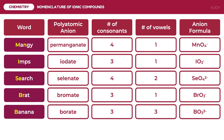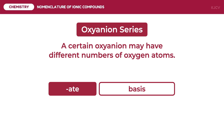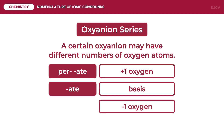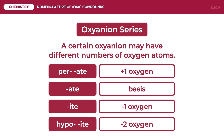However, some oxyanions end in the suffix "-ite". Anions with this suffix are derived from the oxyanion with the suffix "-ate". If we have an extra oxygen atom from the "-ate" ion, we use the prefix "per-" and suffix "-ate". If we have one less oxygen from the base, the oxyanion has a suffix "-ite". And if the anion has two less oxygen atoms, it will have the prefix "hypo-" and the suffix "-ite". These are the different prefixes and suffixes used in the oxyanion series.